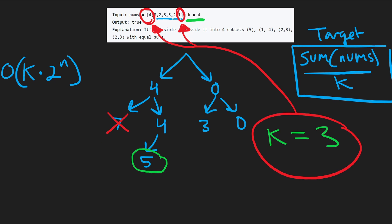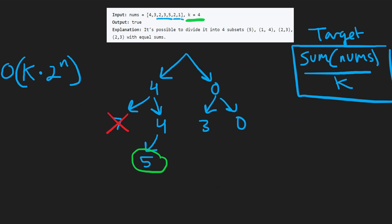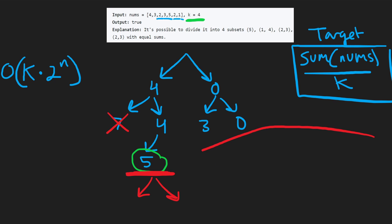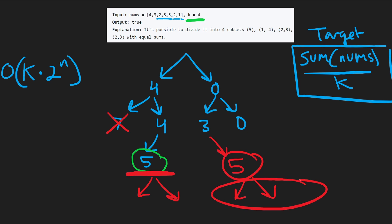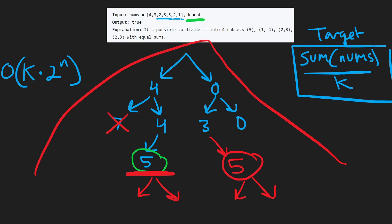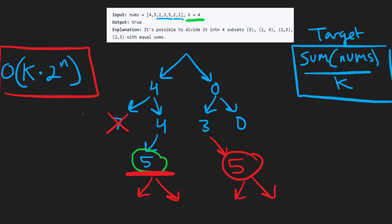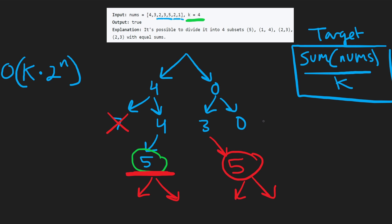We can use an array to keep track of which values we're no longer allowed to use. That's the main logic of this problem. Now we found one subset — next we create another decision tree to find the second subset, then the third and fourth as well. We might not only go down one path; it could branch differently. It's definitely not simple. One of these trees is 2 to the power of n, and we're going to have k of them stacked together, giving the overall time complexity of k times 2 to the power of n.